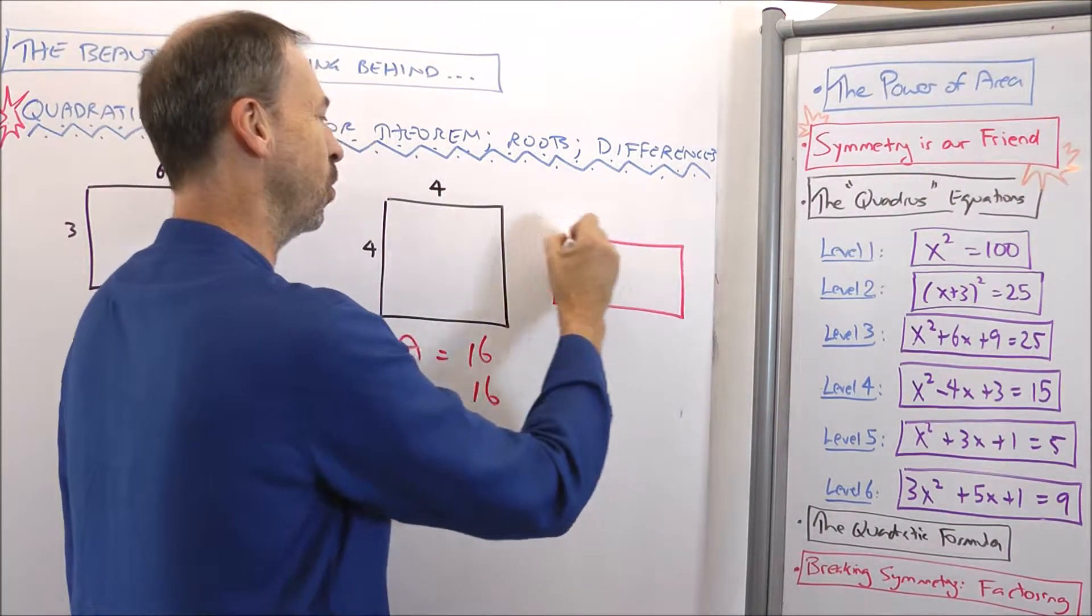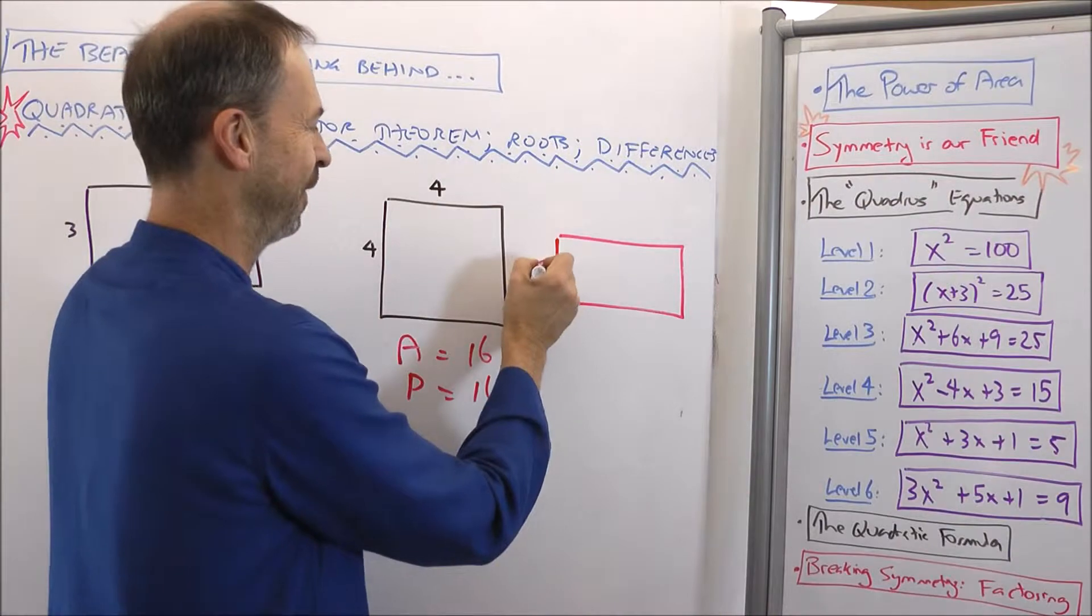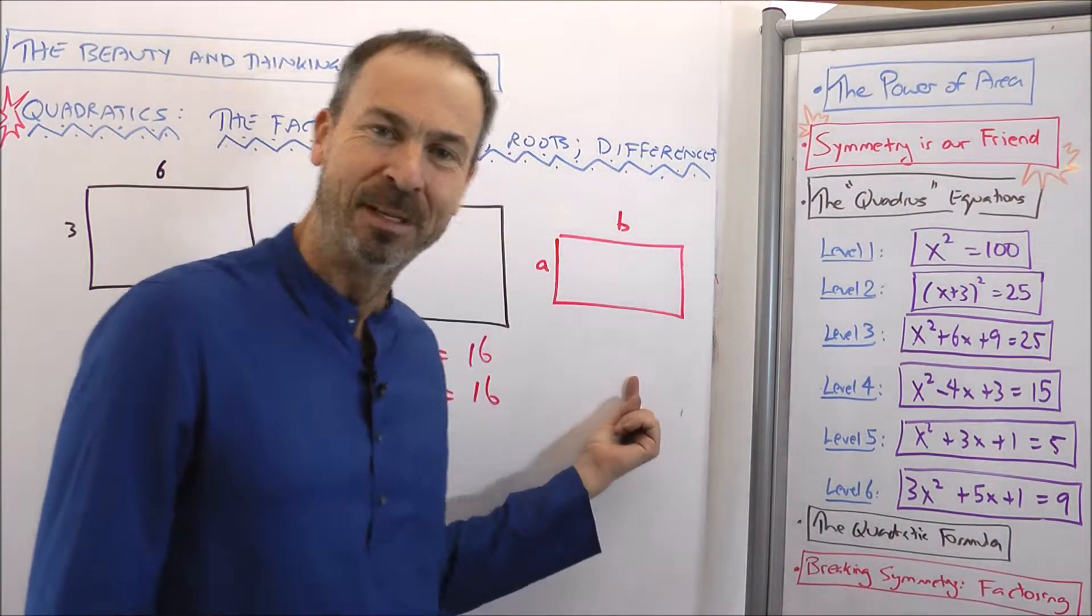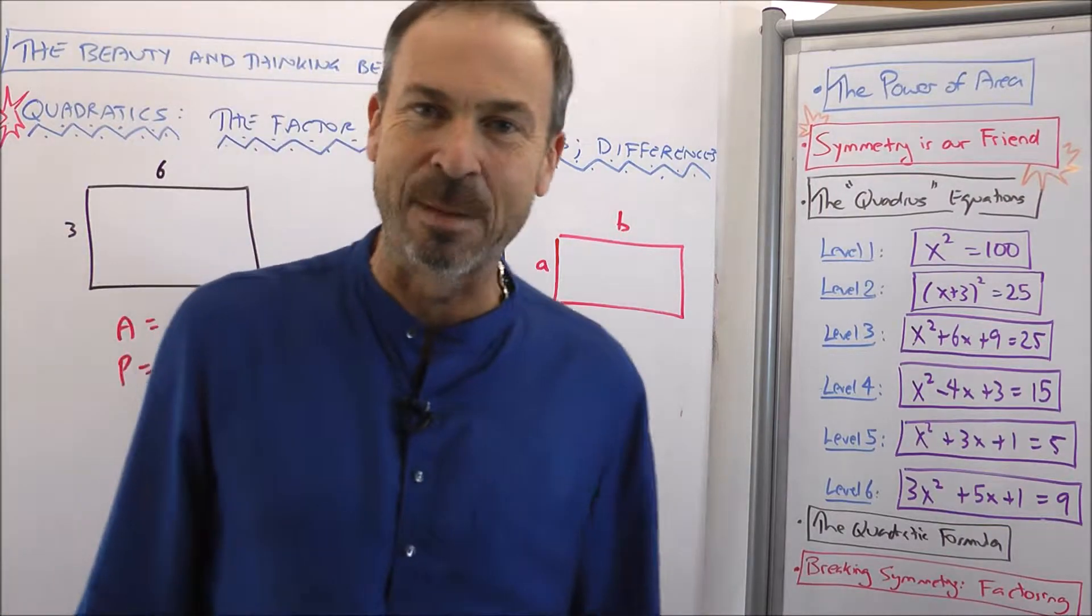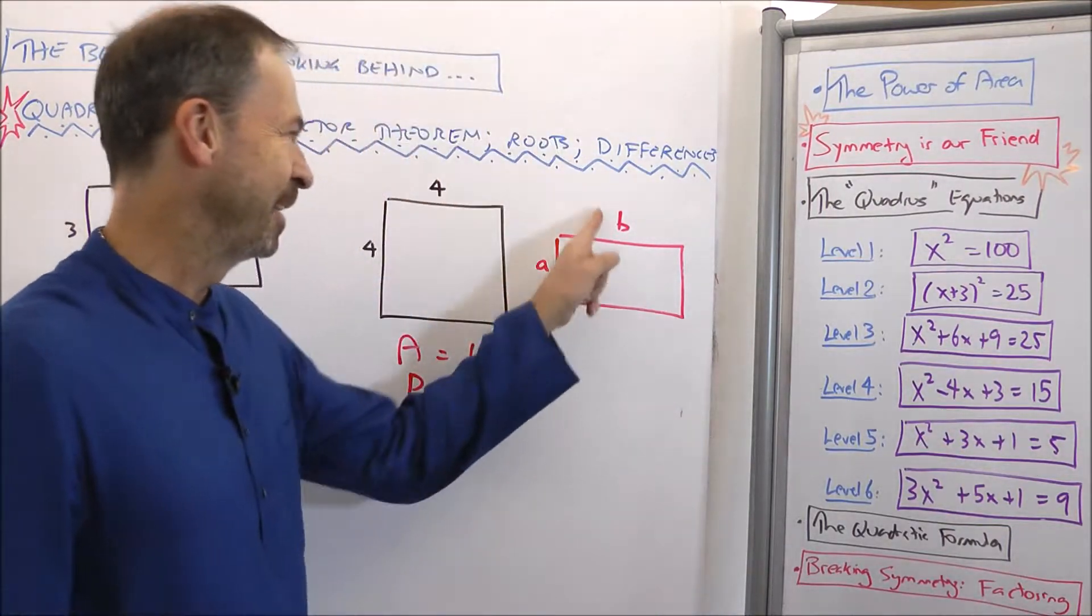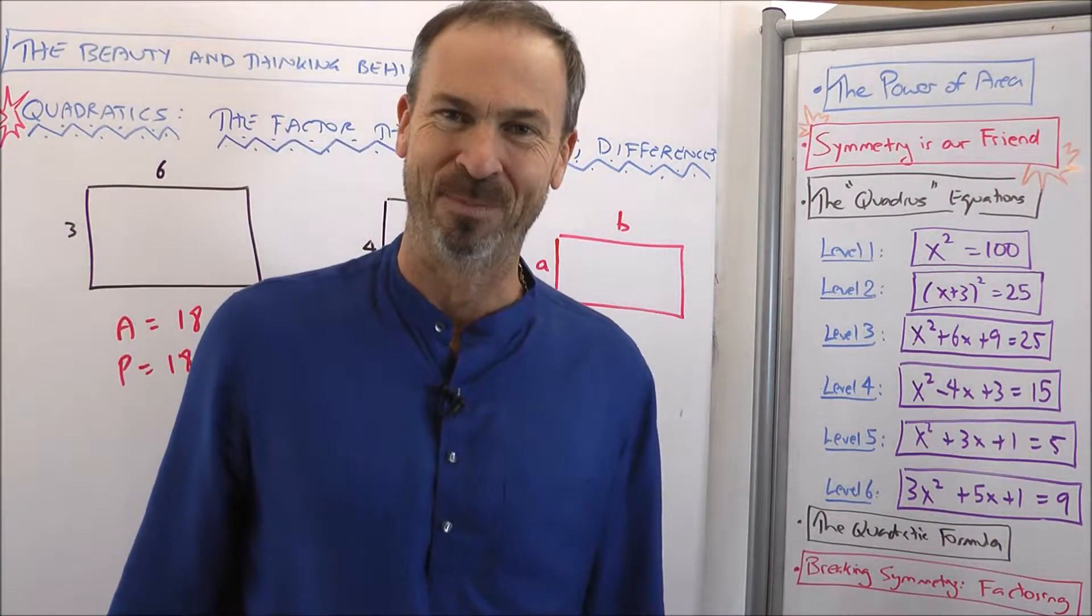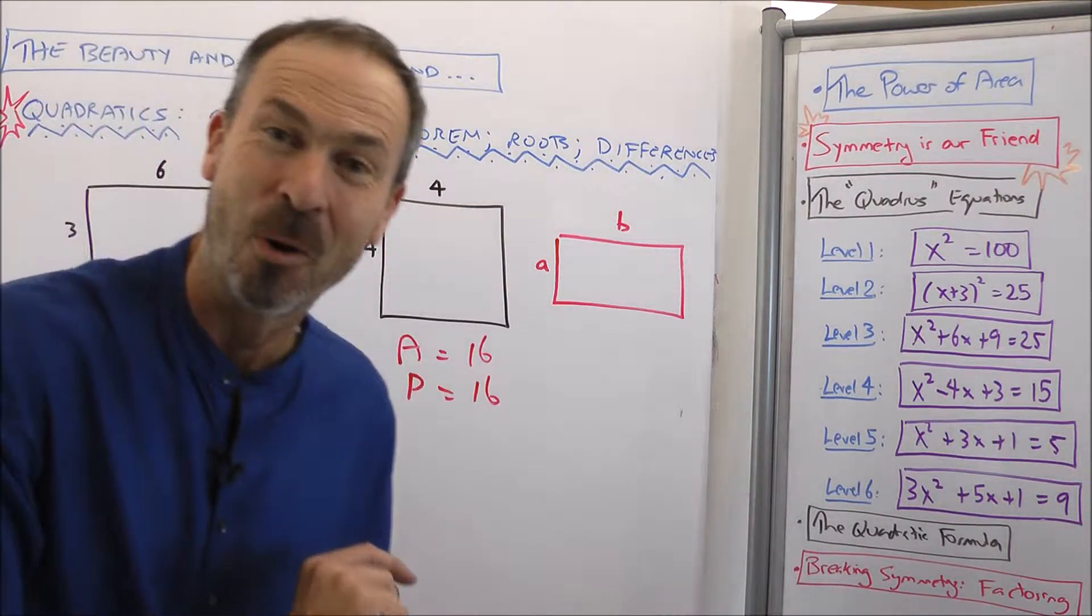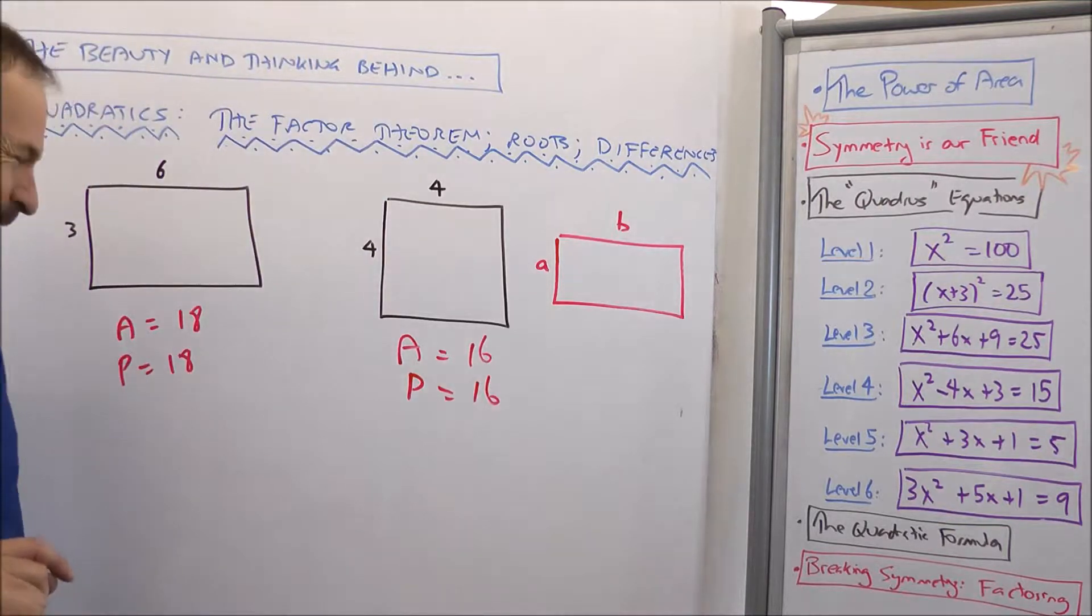Find me all the rectangles of integer side lengths a and b such that the area and the perimeter of these rectangles have the same numerical value. Keep them integers. Can you find me more examples of such rectangles? In fact, find me all the examples. Go for it.